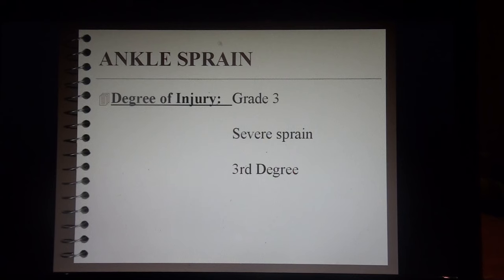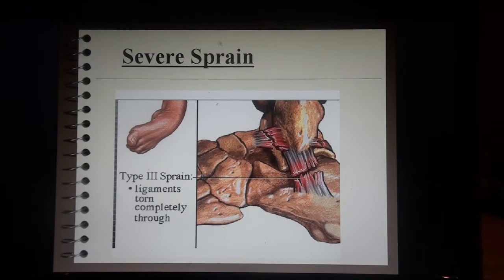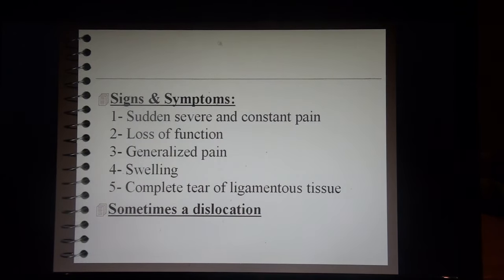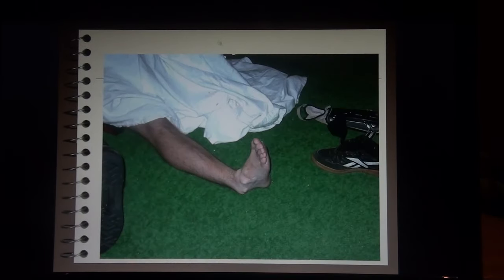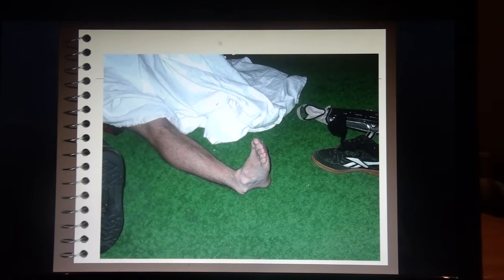In the third degree, we get more inversion torsion and the ligaments are torn completely through — a complete tear. Signs and symptoms include sudden, severe, and constant pain, loss of function, generalized pain, swelling, and complete tear of the ligamentous tissue. Because of the force that goes through the ankle, sometimes we also get a dislocation where the ankle goes into inversion and stays in that position — just as a shoulder dislocates, our ankle can dislocate and stay there until it gets reduced.